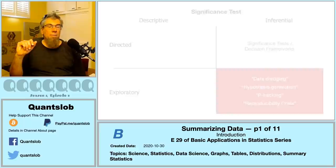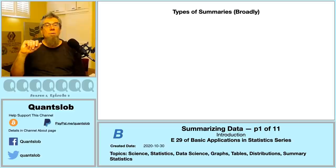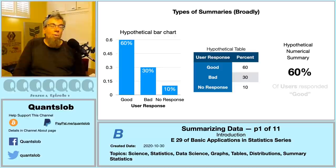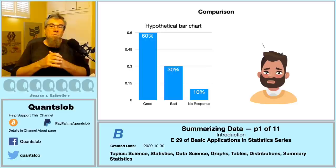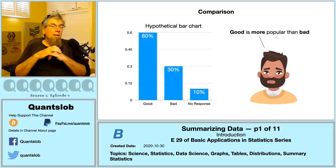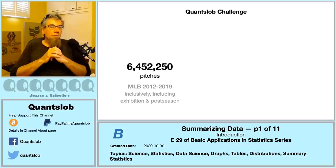How we present our summaries is limited to our imagination, or in some cases the imagination of the audience. We can break down typical summaries into three broad types: graph, table, and numerical. One of the most important things to keep in mind is that all statistical summaries imply some sort of comparison — this is obvious with distributions, but comparison is most always lurking somewhere in the imagination of the consumer of data summaries, even when the summary is just a single numeric statistic.